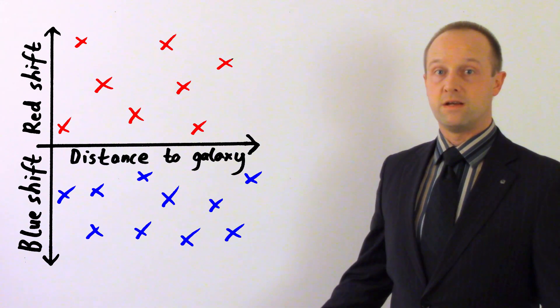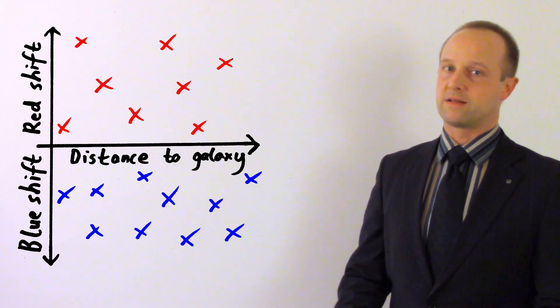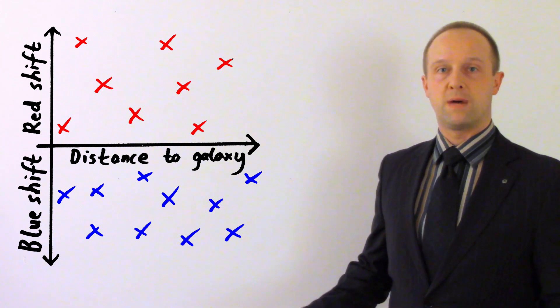That is, some galaxies in the universe would be moving towards us, some galaxies would be moving away from us, and there'd be pretty much no pattern.